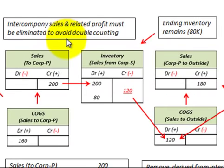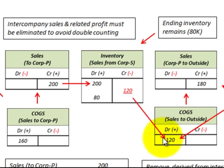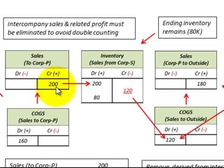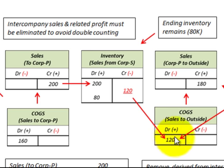Any intercompany sales and related profit on those sales must be eliminated to avoid double accounting in the consolidation. The first thing to focus on is the cost of goods sold to outside parties, which was $120,000. That represents the portion of sales that the subsidiary sold to the parent company — Corporation S sold $200,000 worth but only $120,000 was sold to outside parties. We need to determine what profit was included in that $120,000.